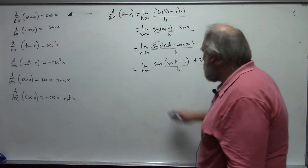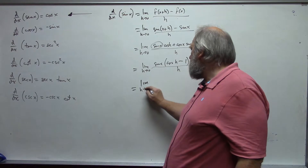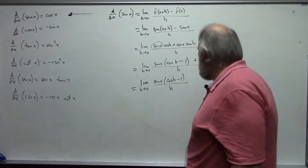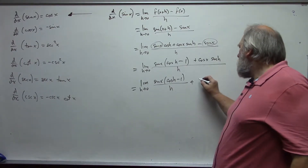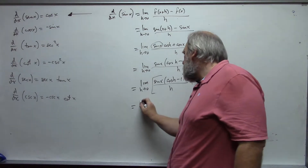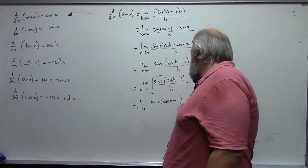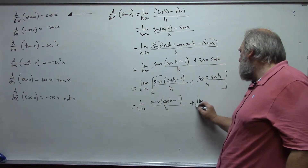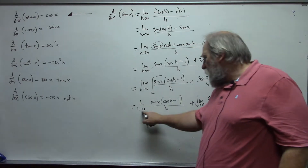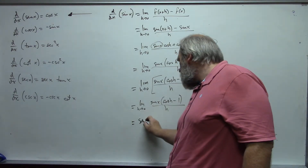We have rules for limits — we can break this apart. Breaking apart the algebra, we get the limit as h approaches 0 of sine(x) times (cosine(h) minus 1) over h, plus the limit as h approaches 0 of cosine(x) times sine(h) over h. Since x is treated like a constant with respect to h, we can pull sine(x) and cosine(x) out in front of the limits.